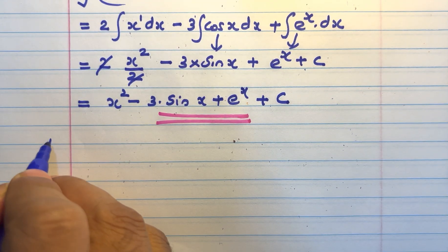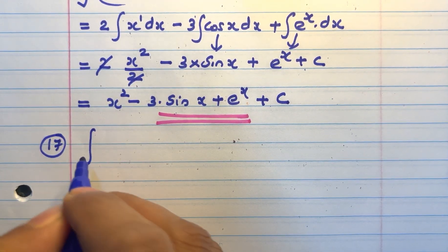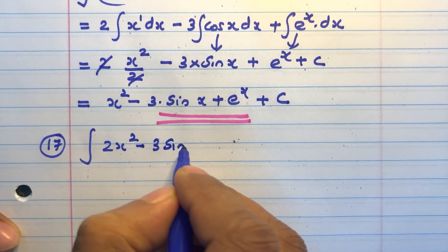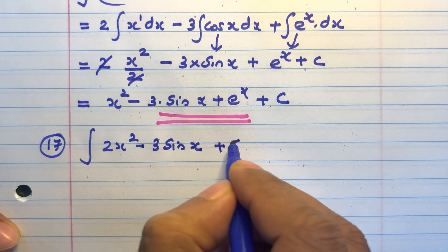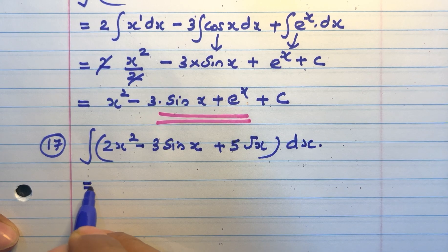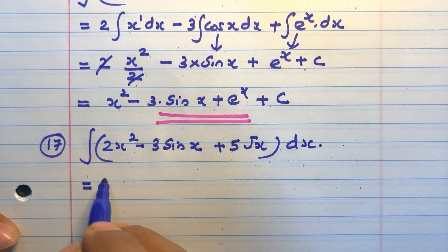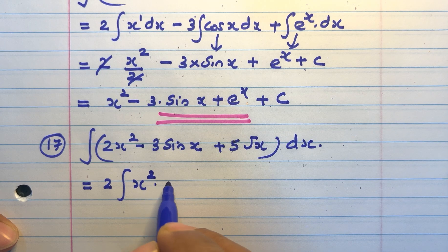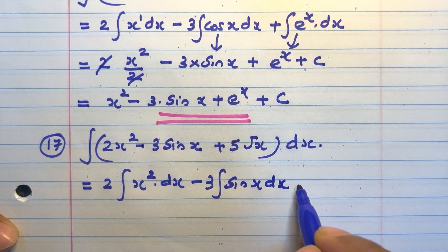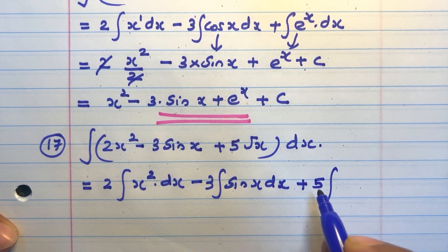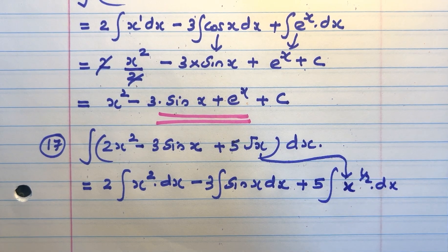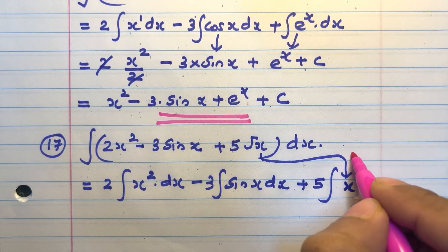Question number 17. Integral of (2x squared minus 3sinx plus 5 root x) into dx. That is equal to 2 integral x squared dx minus 3 integral sinx dx plus 5 integral x raised to 1 by 2 dx. Root x becomes x raised to 1 by 2.